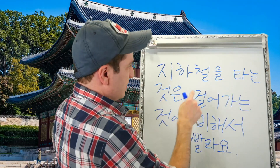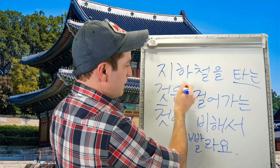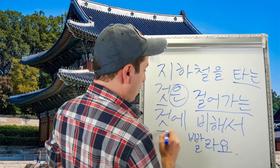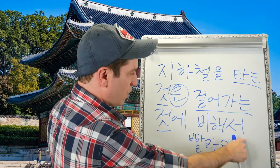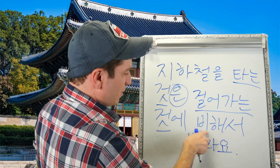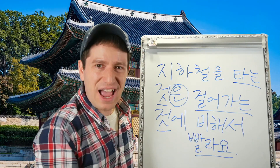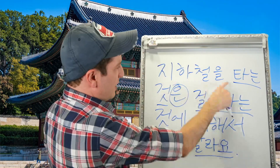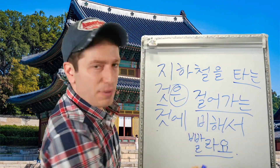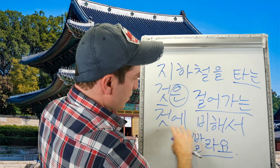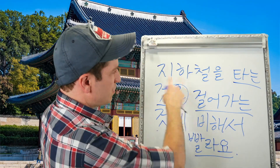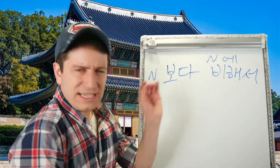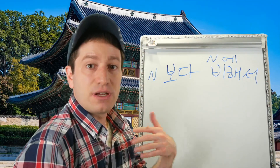Another example: 지하철을 타는 것은 걸어가는 것에 비해서 빨라요. 지하철을 타는 것 means 'taking the subway,' and 걸어가는 것에 비해서 means 'compared to walking there.' So: taking the subway, compared to walking there, is faster — 빨라요. You can also think of it as 더 빨라요, but you don't need to include 더.